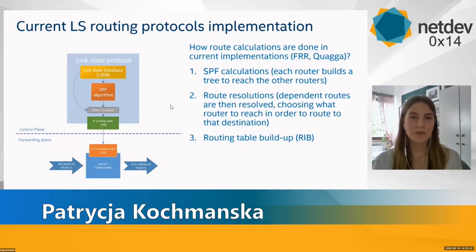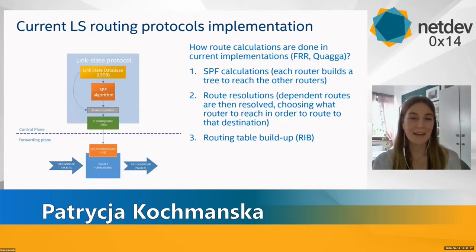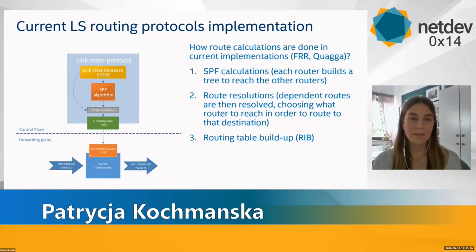In order to create routing information base, the link state protocol undertakes a few steps. Firstly, it creates the link state database based on LSA packets. Then it performs SPF calculations in order to create the shortest path tree. The tree is then used to determine the most efficient routes and to create the routing table. This routing table is then passed to the kernel space and effectively used to forward packets to specific ports.